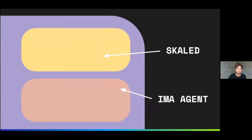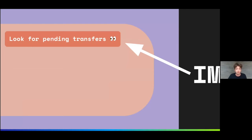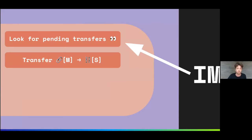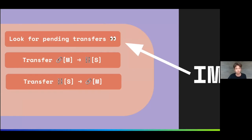Let's take a closer look at the IMA container. What it does is basically look for all pending transfers and perform all transaction transfers — from mainnet to S-chain, from S-chain to mainnet, and repeat.